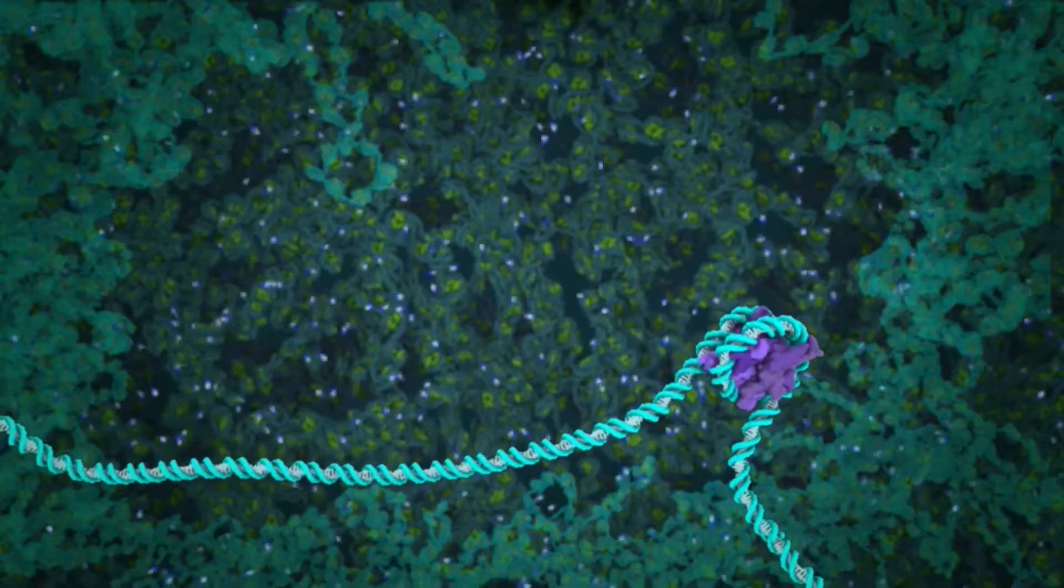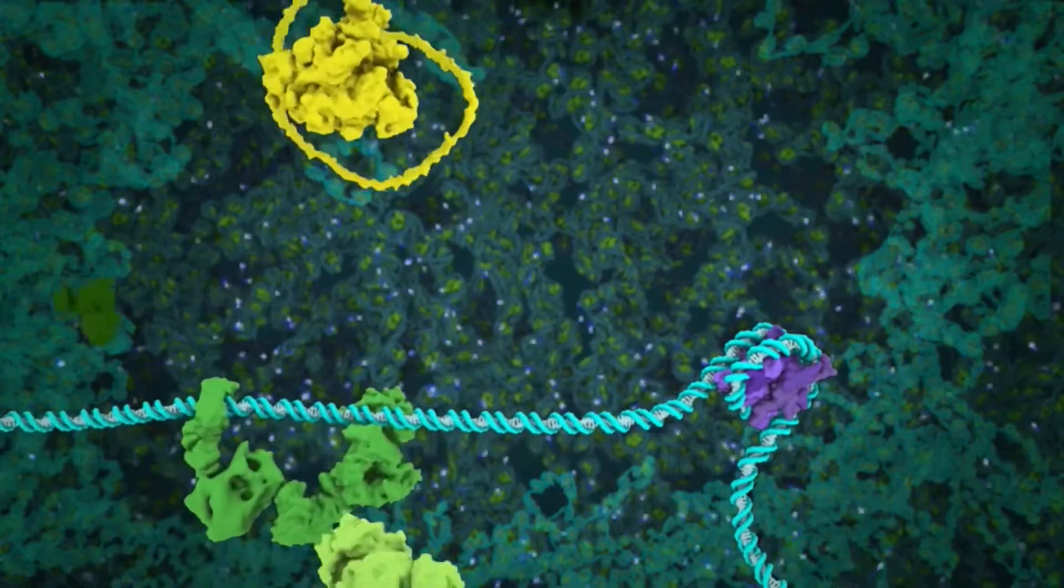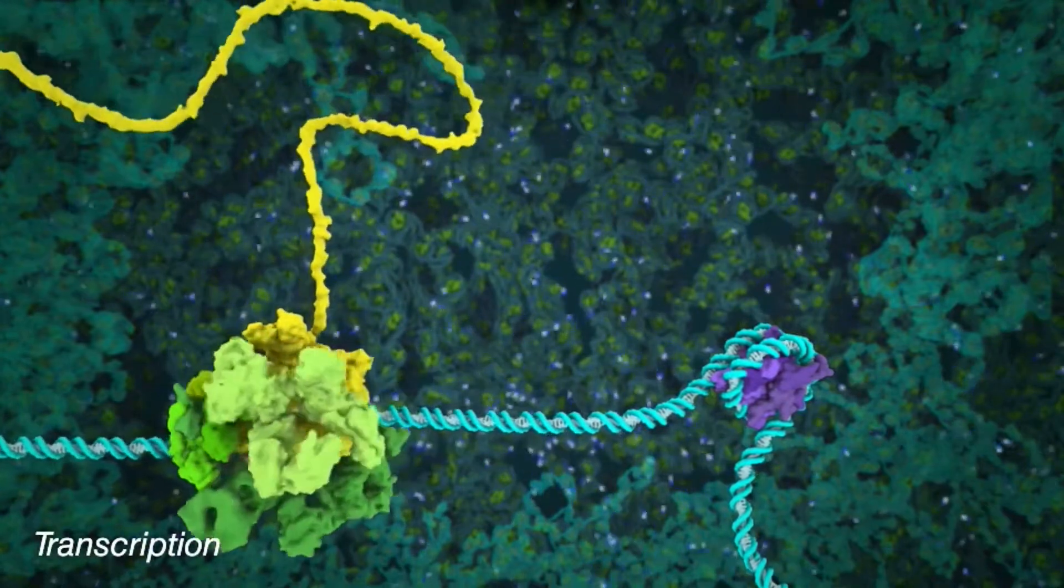After activation, the cell begins its transformation into a viral factory. In the first stage, the viral DNA is copied into RNA, a process known as transcription, that is carried out by RNA polymerase, shown in yellow.